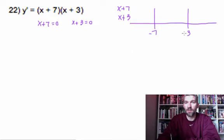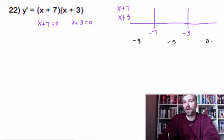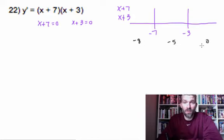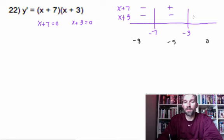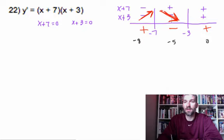We're not looking at a specific number, just the sign. Pick a number less than negative 7, like negative 8; a number between negative 7 and negative 3, like negative 5; and a number larger than negative 3, like 0. When I put negative 8 in, I get minus and minus. When I put negative 5 in, I get plus and minus. When I put 0 in, I get plus and plus. Overall, my graph is increasing, then decreasing, then increasing — that is, increasing to a maximum, decreasing to a minimum, and increasing again.